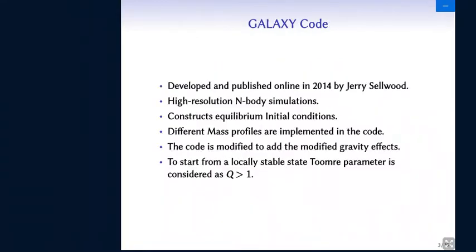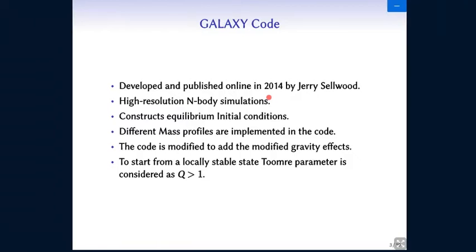Now, the code I'm using is the Galaxy code. It is developed by Jerry Selwood and he's going to talk more about this code in the next session. I'll just mention that it is a high resolution N-body simulation code and you can construct initial conditions in equilibrium. And one of the good options in this code is that different mass models, different mass profiles are implemented in the code. So you can choose what you want and go on, although you have to notice some specifics that I'm going to talk about later.